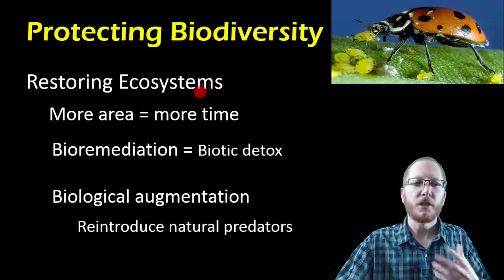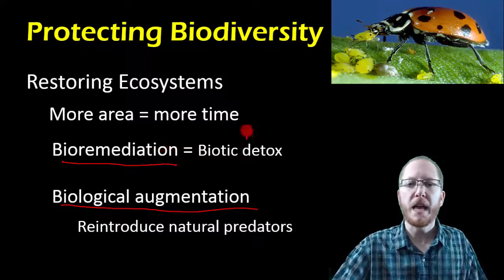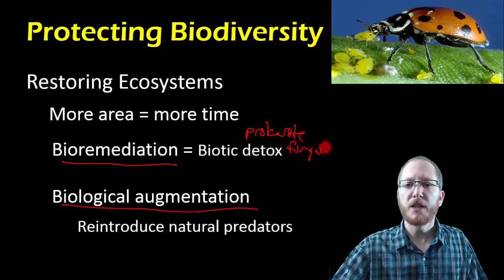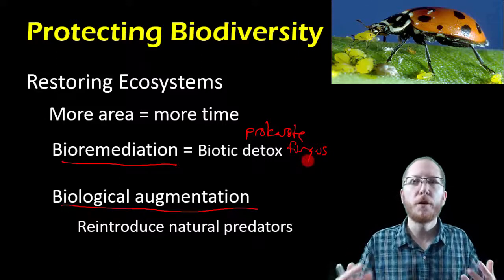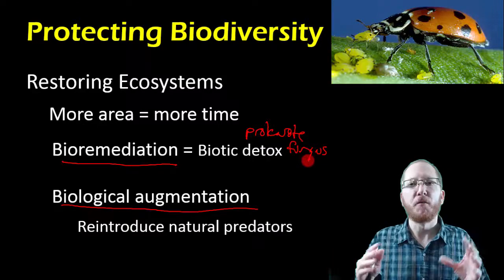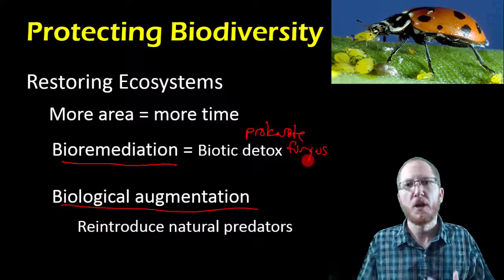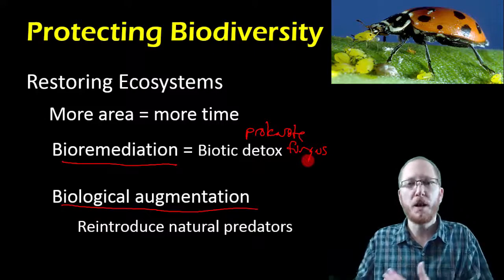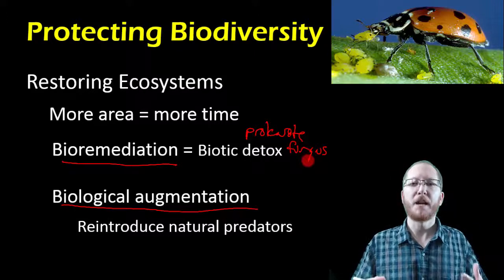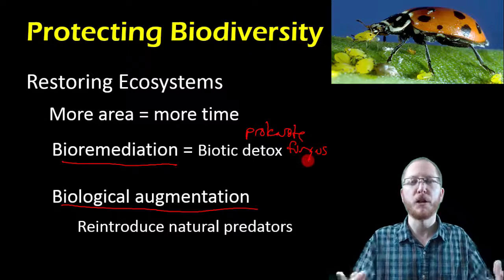Another way to fix damaged ecosystems is bioremediation or biological augmentation. Bioremediation uses organisms — typically prokaryotes or fungi — that are decomposers and can break down pollutants like plastics or oils and convert them to a safer, more stable form. This is gaining popularity over dumping more chemicals to clean up pollution, which just causes additional chemical pollution. We're breeding and developing better organisms that can handle this task, so eventually we may solve pollution in a more natural way rather than with heavy machinery and more chemicals.